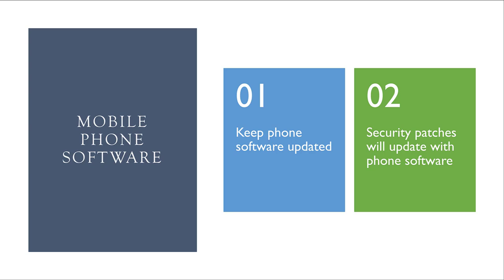Firstly, you must make sure that the software on your mobile phone is up to date. This means following all prompts for updating your phone as they come in, even at the expense of having some delays in order to do the install. While these new versions of the software are being installed, you will get all the necessary security patches at the same time.